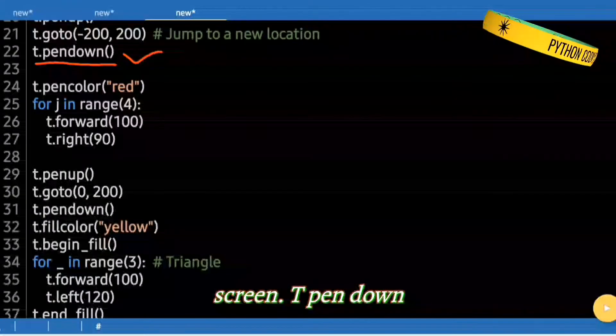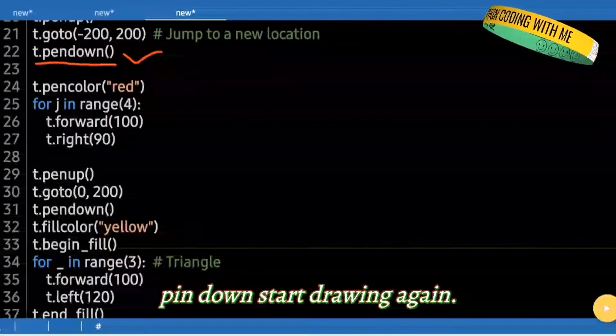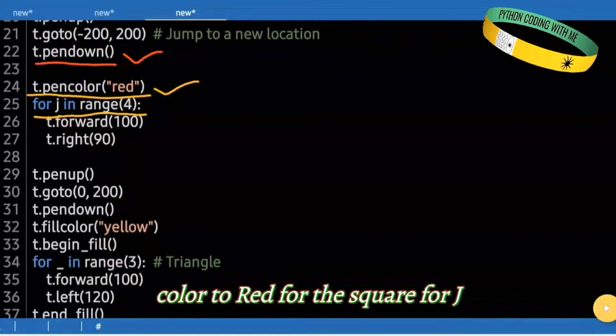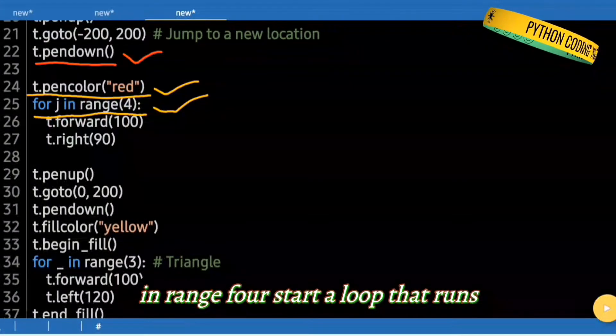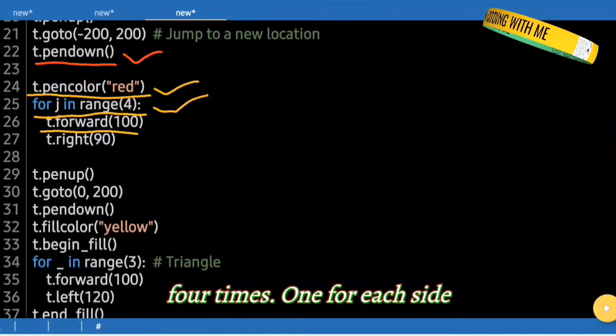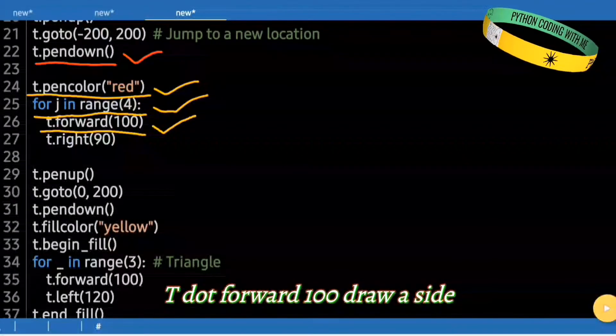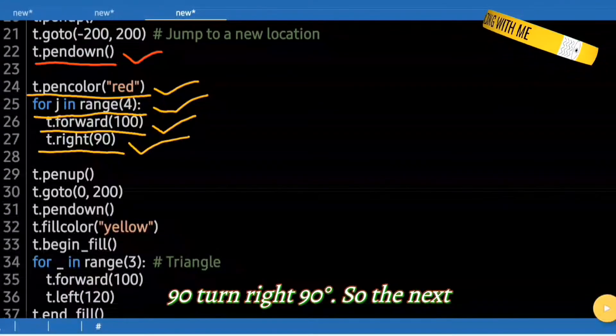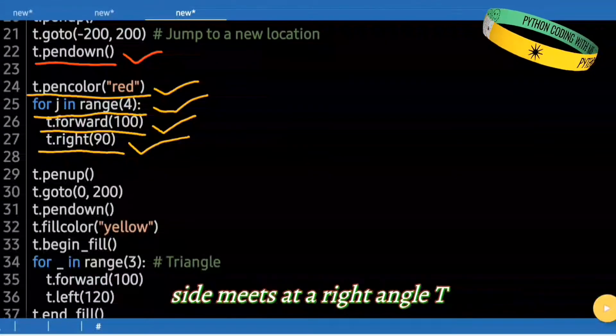t.pendown(). Start drawing again. t.pencolor("red"). Change pen color to red for the square. For j in range(4): Start a loop that runs 4 times, 1 for each side. t.forward(100). Draw a side. t.right(90). Turn right 90 degrees so the next side meets at a right angle.